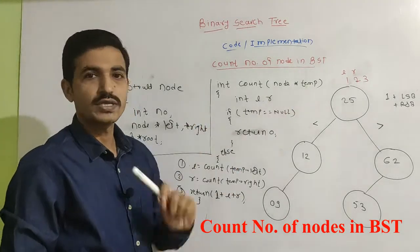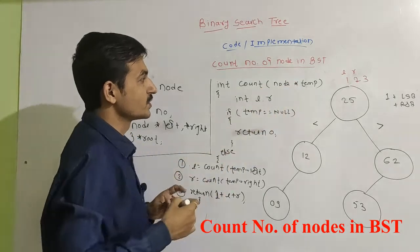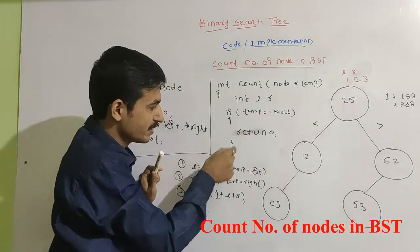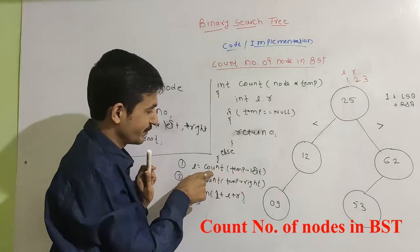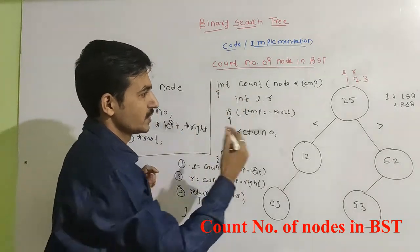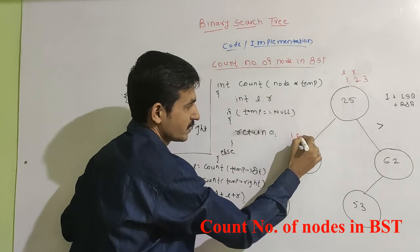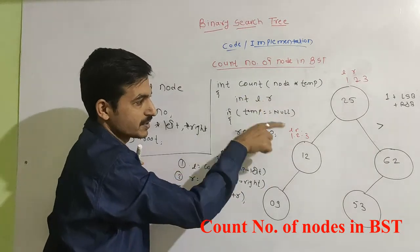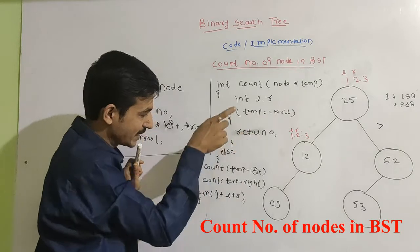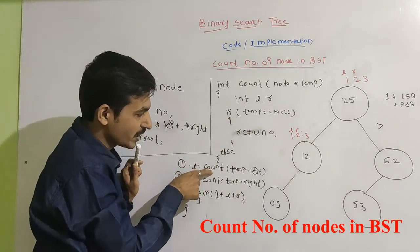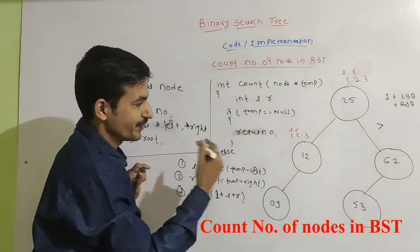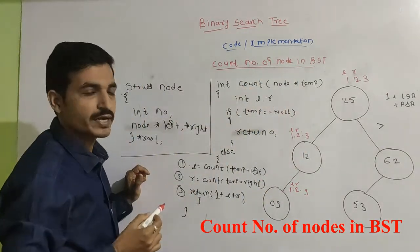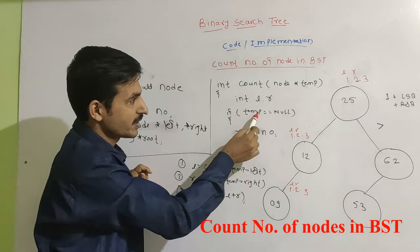The function executes and checks whether temp is equal to null. Temp is not null, so the null check is skipped and execution enters the else part. It calls count(temp->left), which triggers a recursive call. The function executes again for lines 1, 2, and 3 — that is L, R, and the return statement. The function comes back to the starting point and checks temp equal to null again.